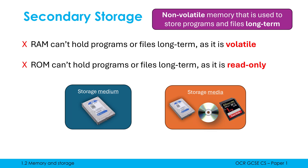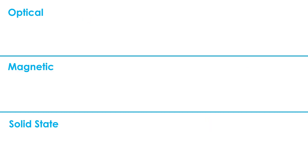The main thing you need to know beyond the basics are the three types of secondary storage, and you need to be able to give examples of storage media for these three types and evaluate them. The three types of secondary storage are optical, magnetic, and solid state.